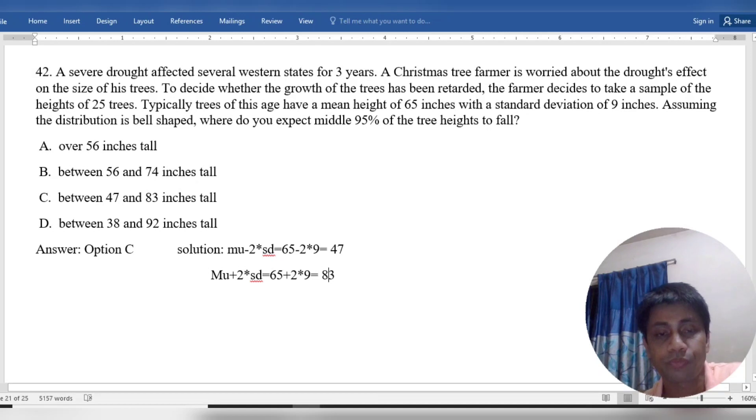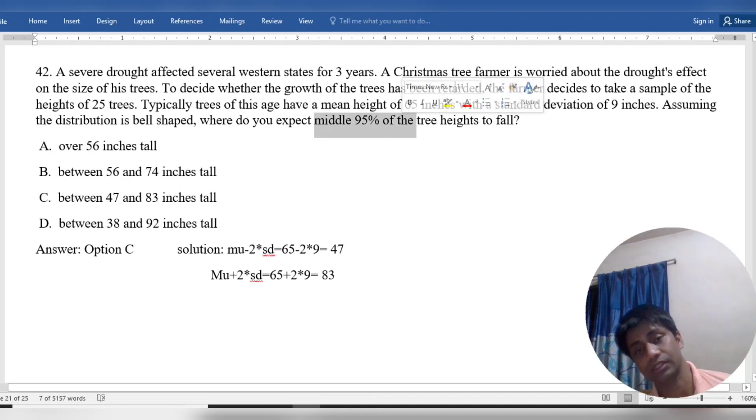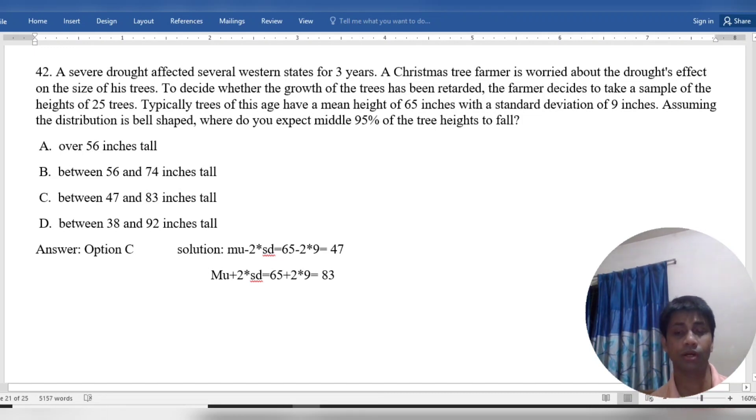So the desired result is option C: between 47 and 83 inches, because it's the middle 95%. We used the empirical rule to get the desired result. Thanks and see you next time.